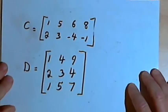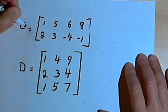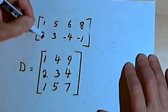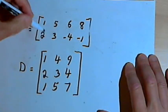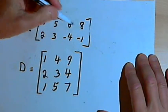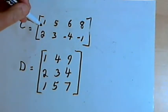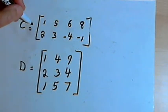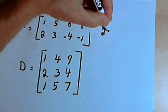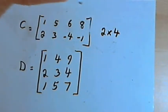So here are two more matrices. Matrix C has two rows and four columns. We talk about the size of a matrix by talking about the number of rows and the number of columns. So matrix C is a 2 by 4 matrix.